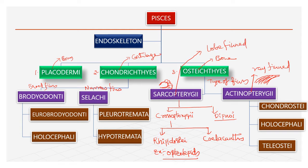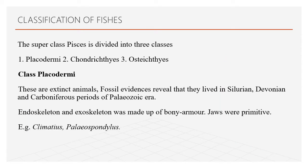We will now go into a deeper discussion about each group in this classification. The first class is Placodermi. This class includes extinct fishes. Their fossils are evidences showing they survived in the Silurian, Devonian, and Carboniferous periods of the Palaeozoic era. Both endoskeleton and exoskeleton are completely made up of bone, making these heavily armored fishes with very primitive jaws. Examples are Climatius and Paleospondylus.